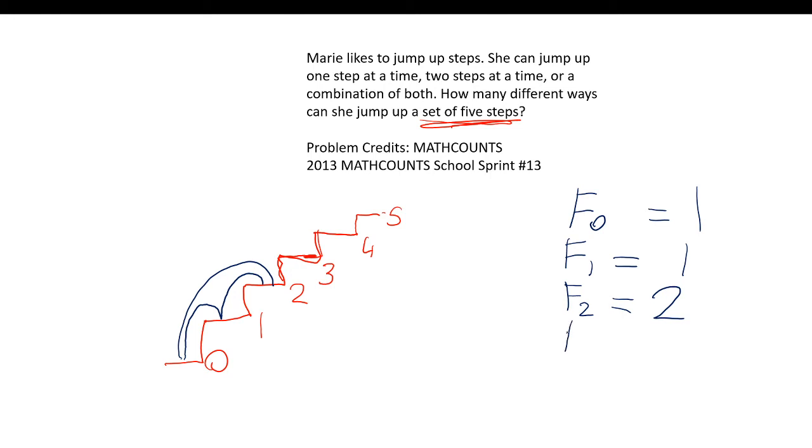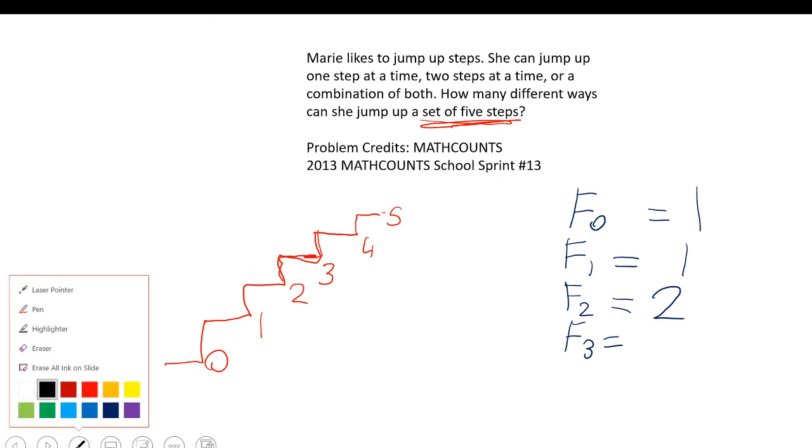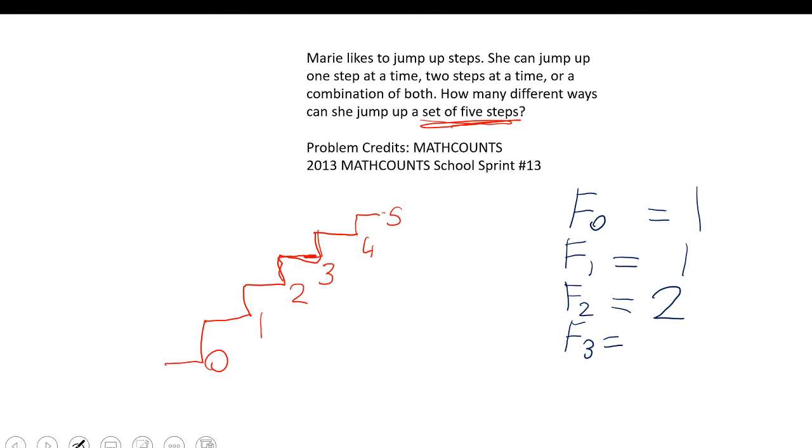I'm just going to list out the cases for F3 because that isn't hard to do. To get to the third step from the zero step, first we can just go one-one-one. That's one case.